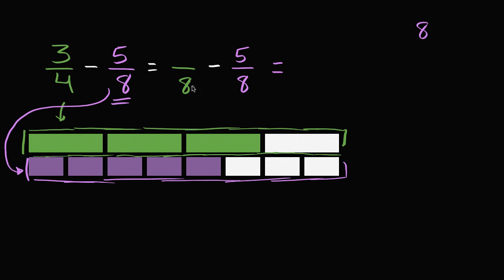So how can we rewrite 3/4 as something over 8? Well, there's a couple of ways to think about doing it. One way, look, I had 4 in the denominator, now I'm going to have twice as many equal sections. I multiplied by 2, so I'm going to have twice as many of the sections actually shaded in. So times 2, 3/4 is the same thing as 6/8.